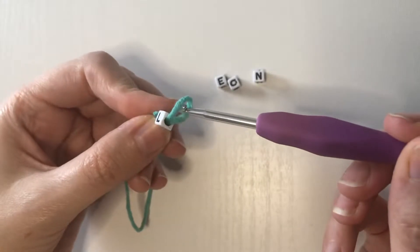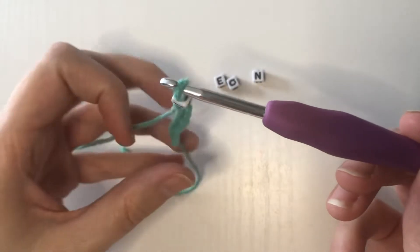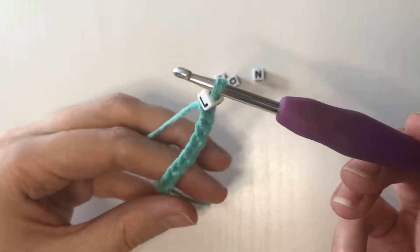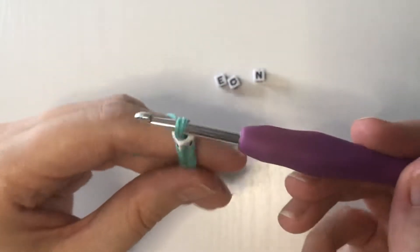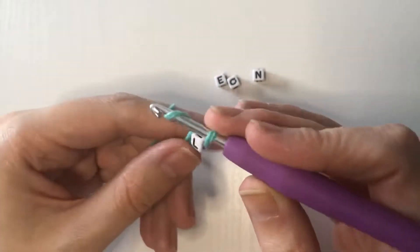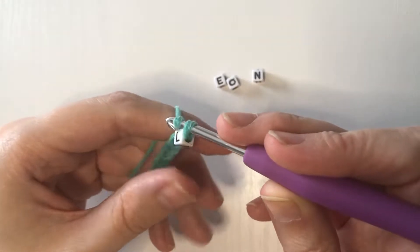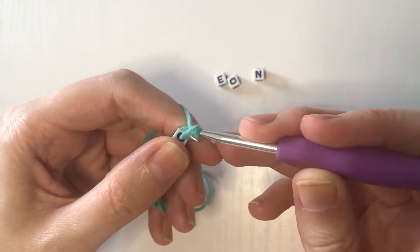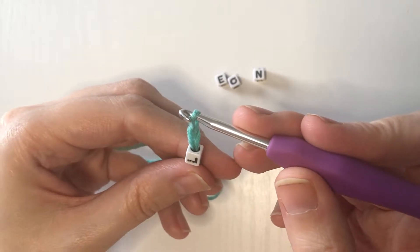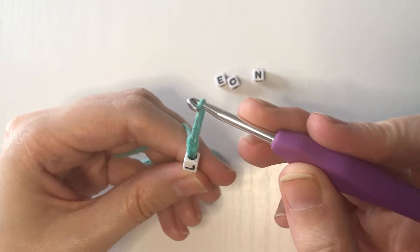Now we're gonna put our crochet hook back into that loop and pull the long tail a little bit tighter. We're gonna pretend like there's no bead, nothing happened, and make another chain. One chain, there you go. Hold the bead. Now we're gonna do exactly the same thing again.